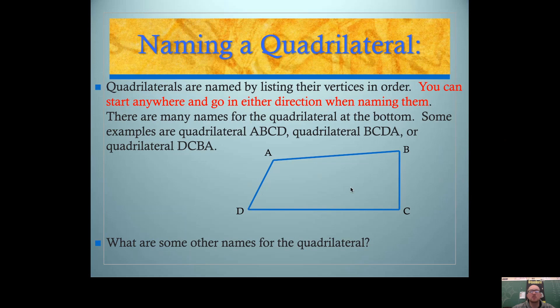As long as you go around the shape, you can start at any letter. So for example, you could also name it quadrilateral B, A, D, C. What you don't want to do is start at a letter and then jump across the shape. You must go around in one direction or the other. So there's multiple ways to name any one quadrilateral using the vertices.